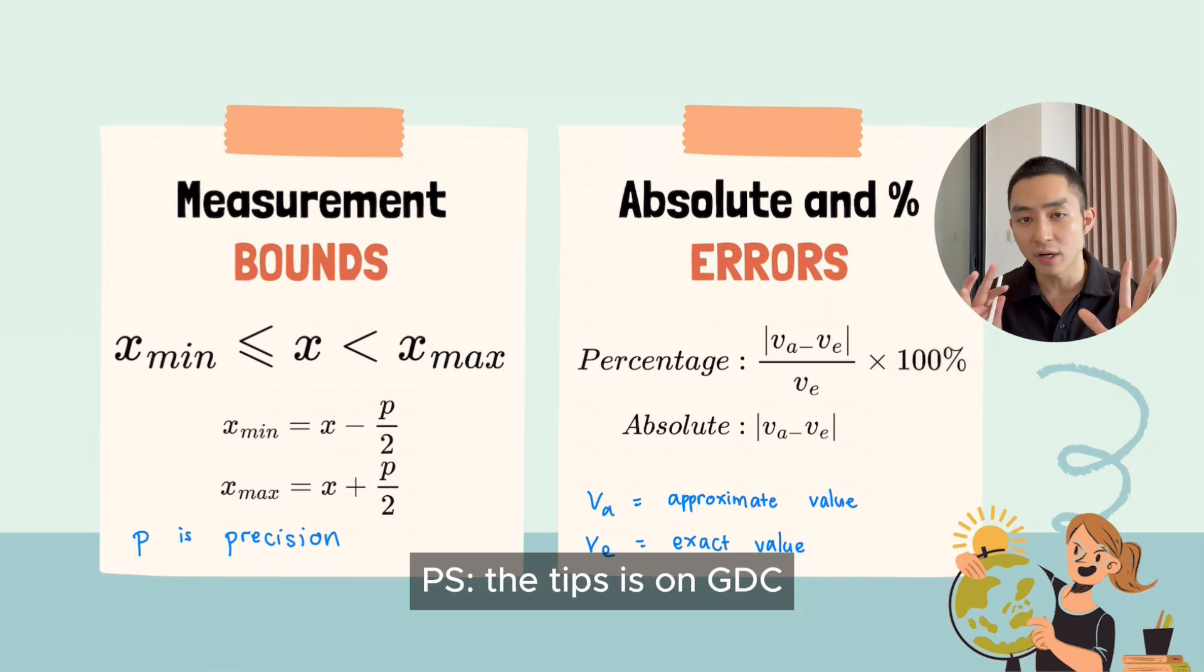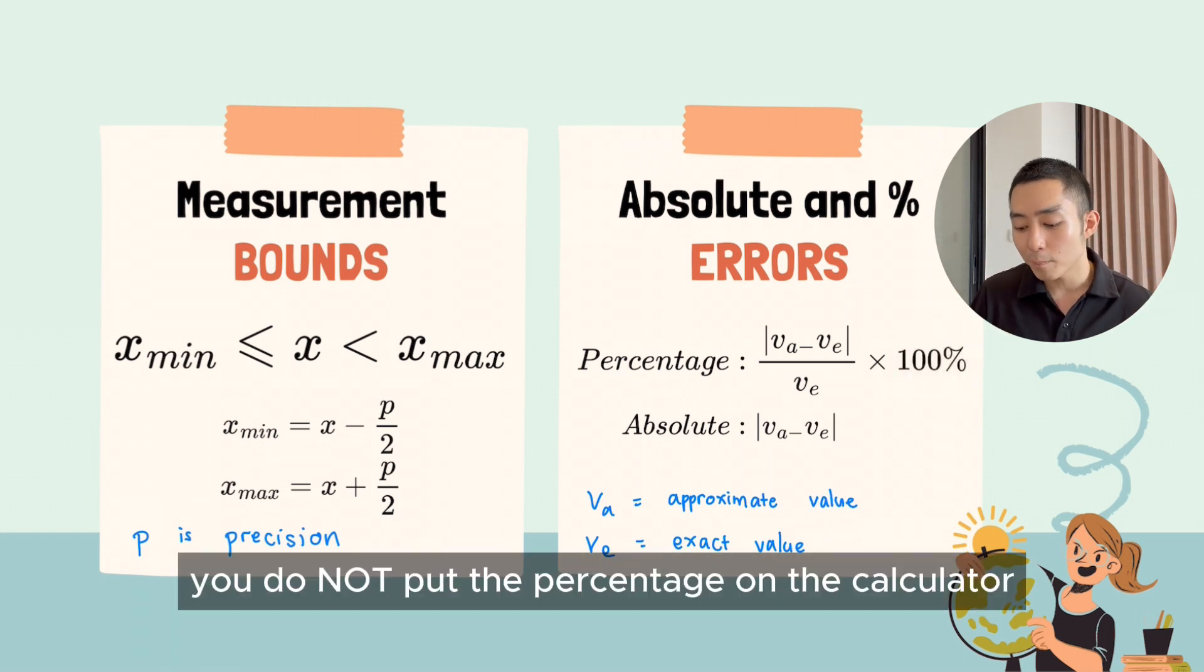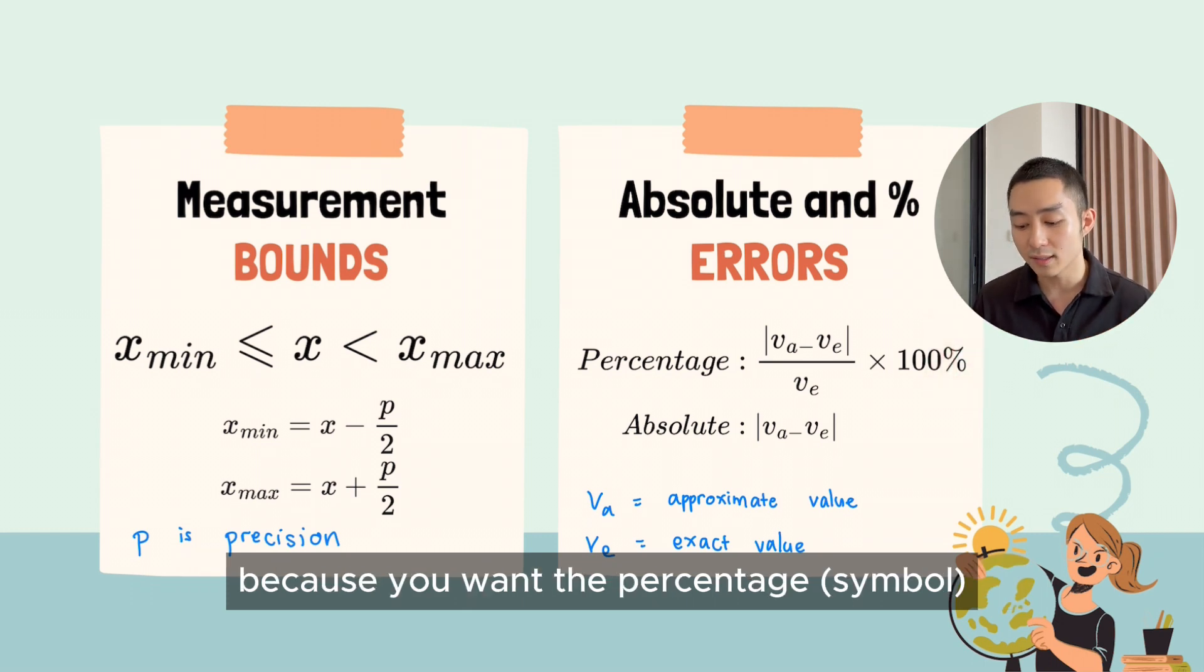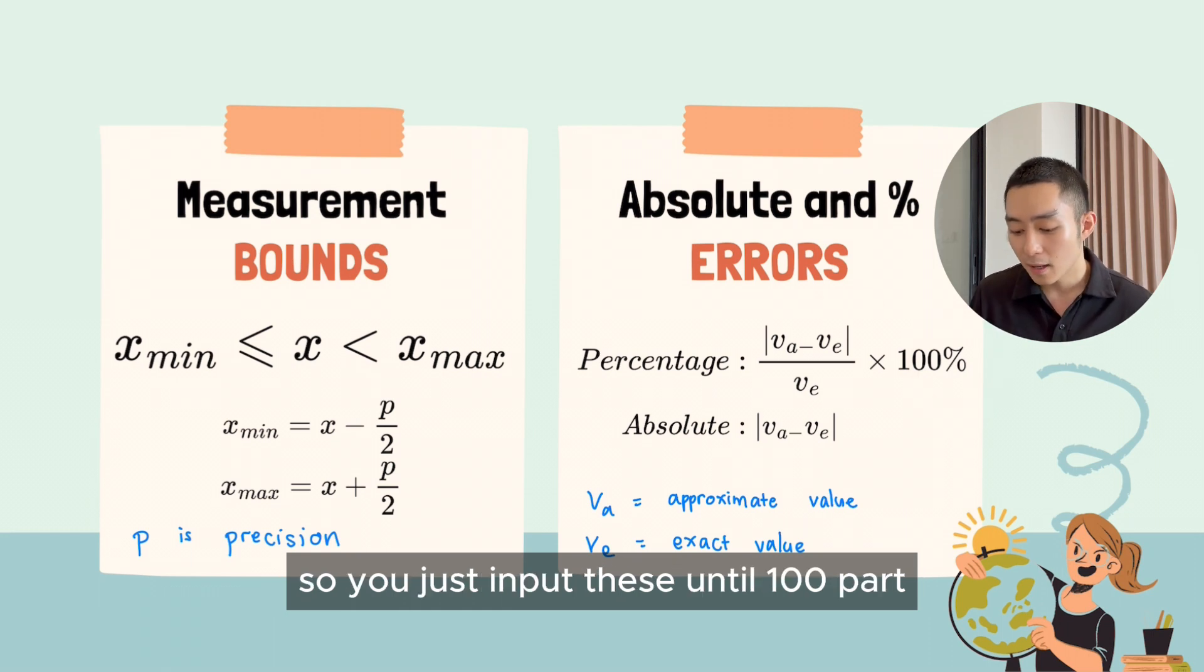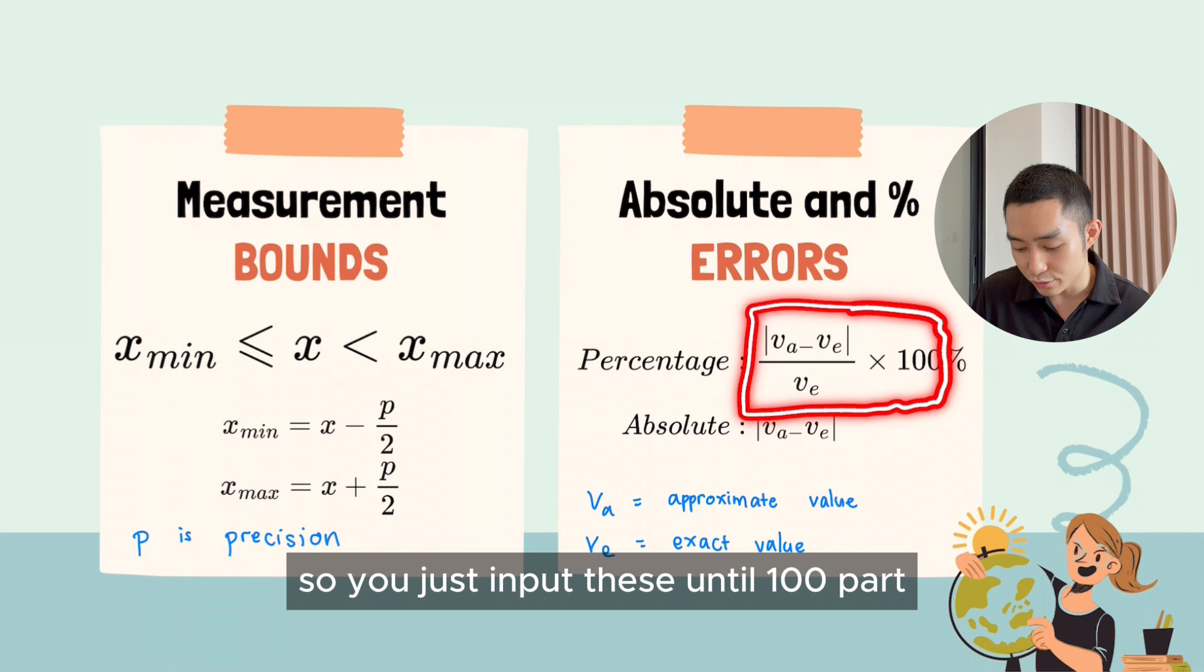So the tip is on GDC, you do not put the percentage on the calculator because you want the percentage to be acting as a unit of measurement. So you just input these until the 100 part.